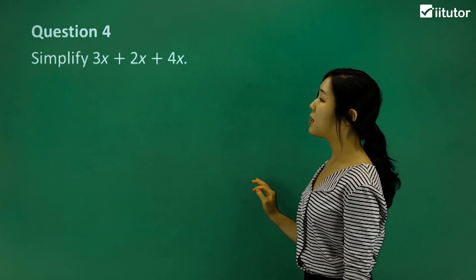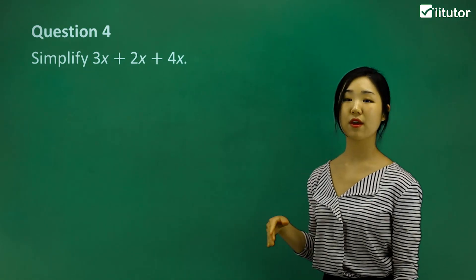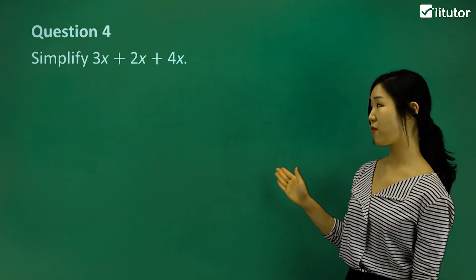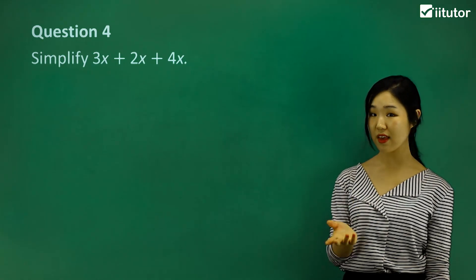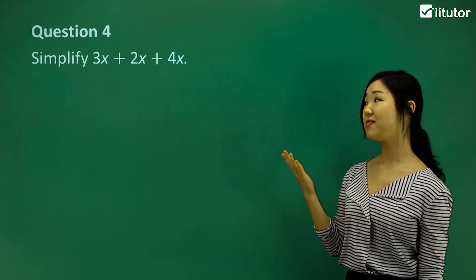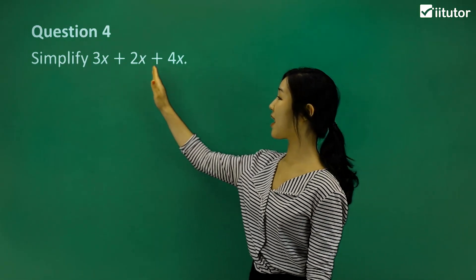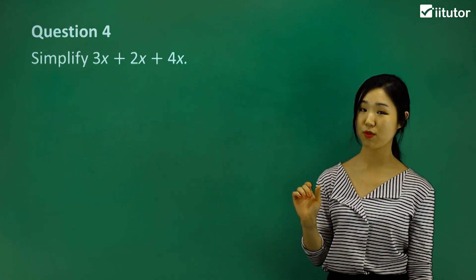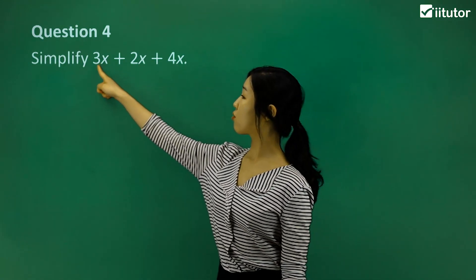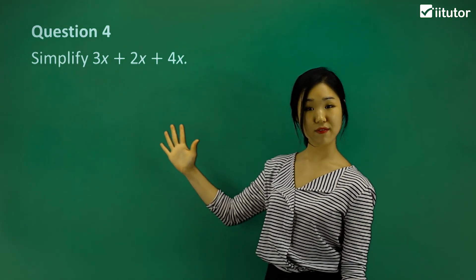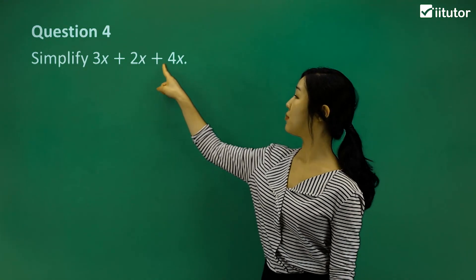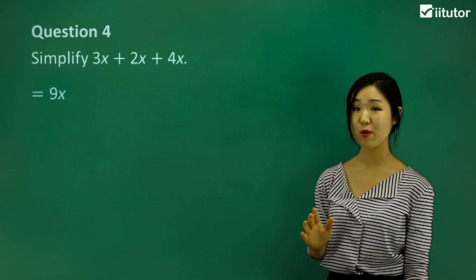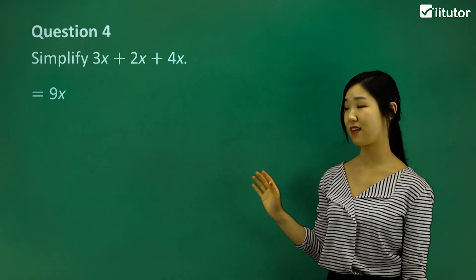Question four: simplify 3x plus 2x plus 4x. Are they like terms? Definitely yes, because they all end in the same variable x. So we just group the coefficients: 3 plus 2 makes 5, plus another 4 makes 9. So the total is 9x. That's all you need to do in its simplest form.